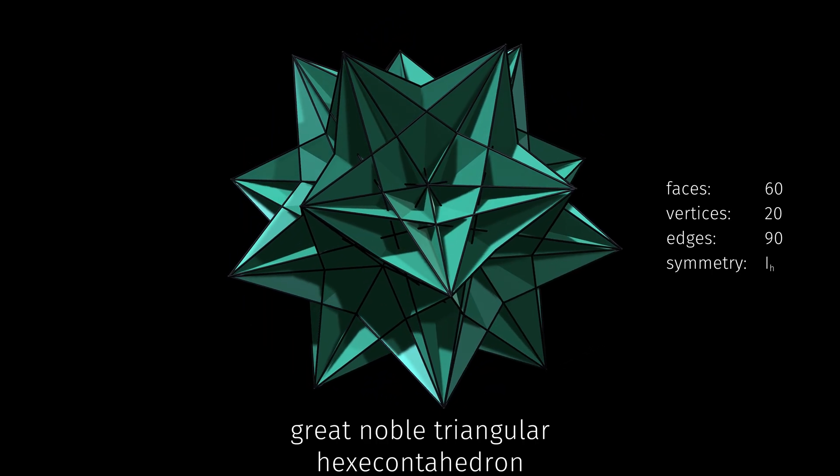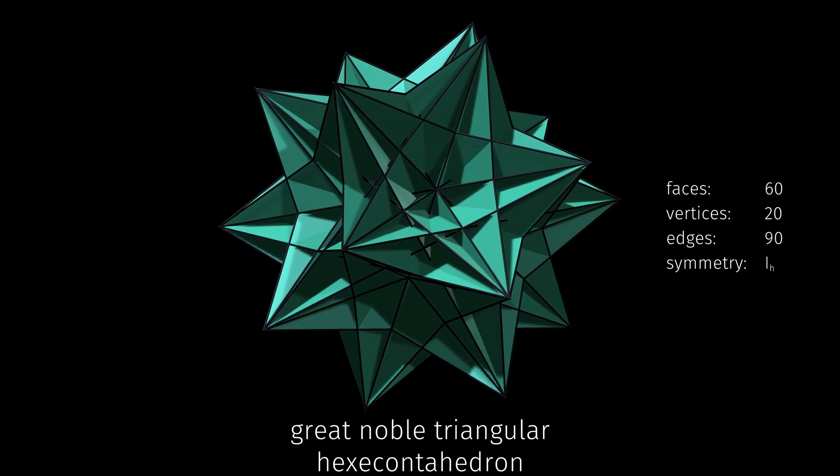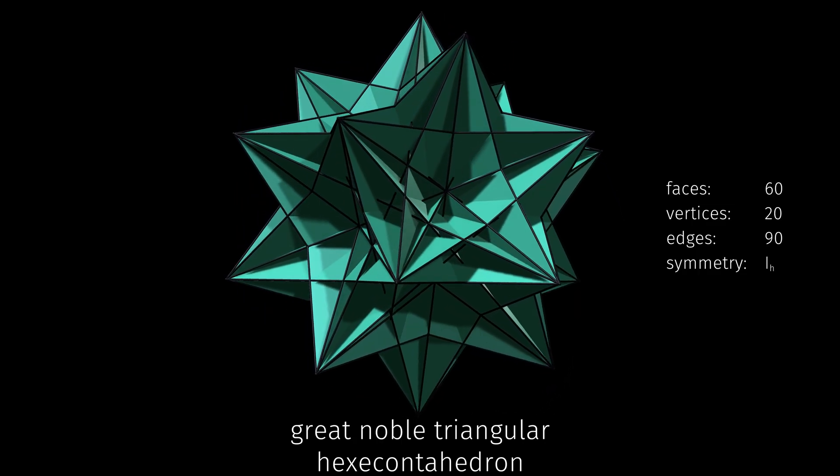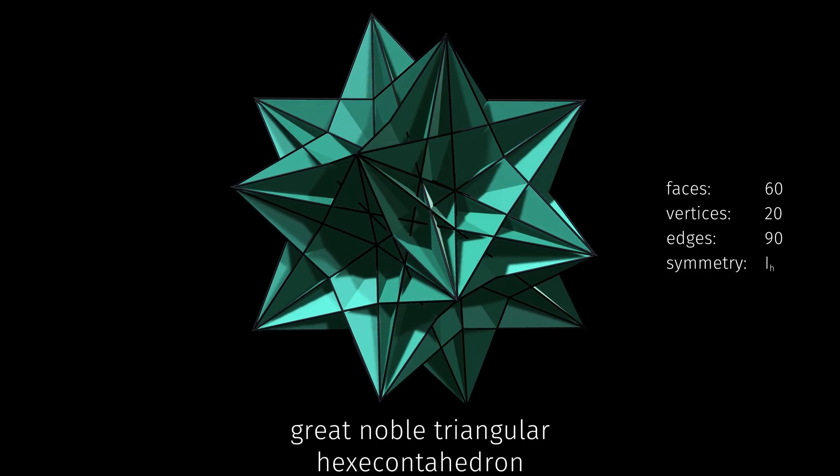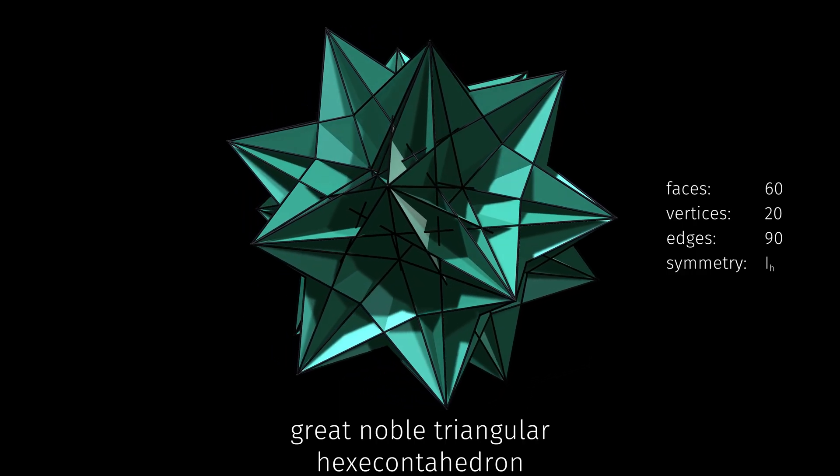An icosahedron stellation is built by extending the faces of an icosahedron outward, so its dual must be a dodecahedron with new faces stretched between its vertices.